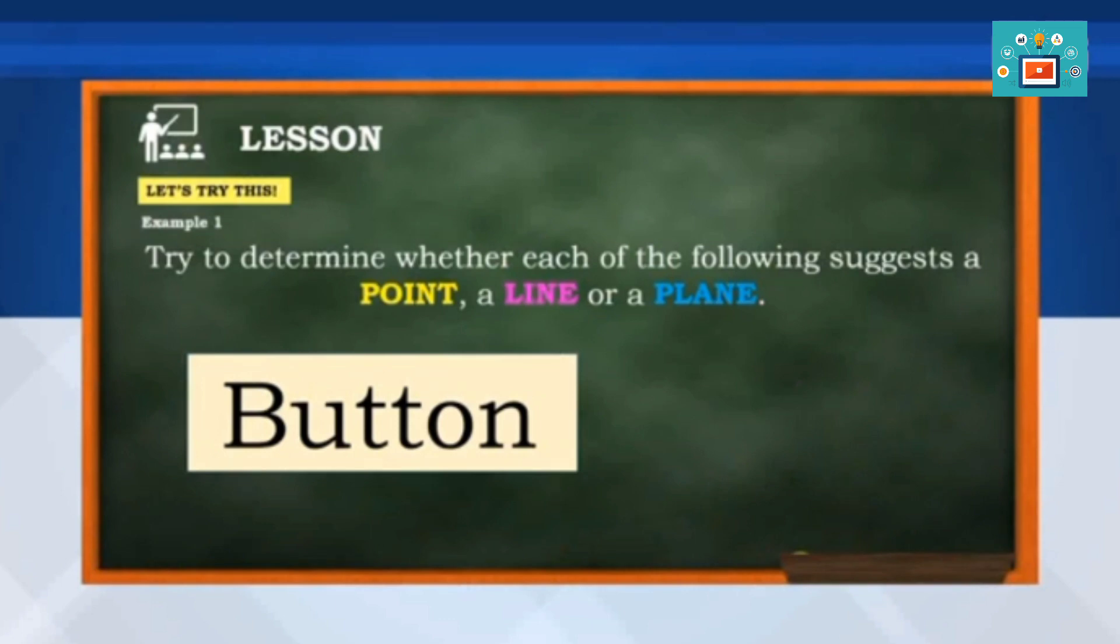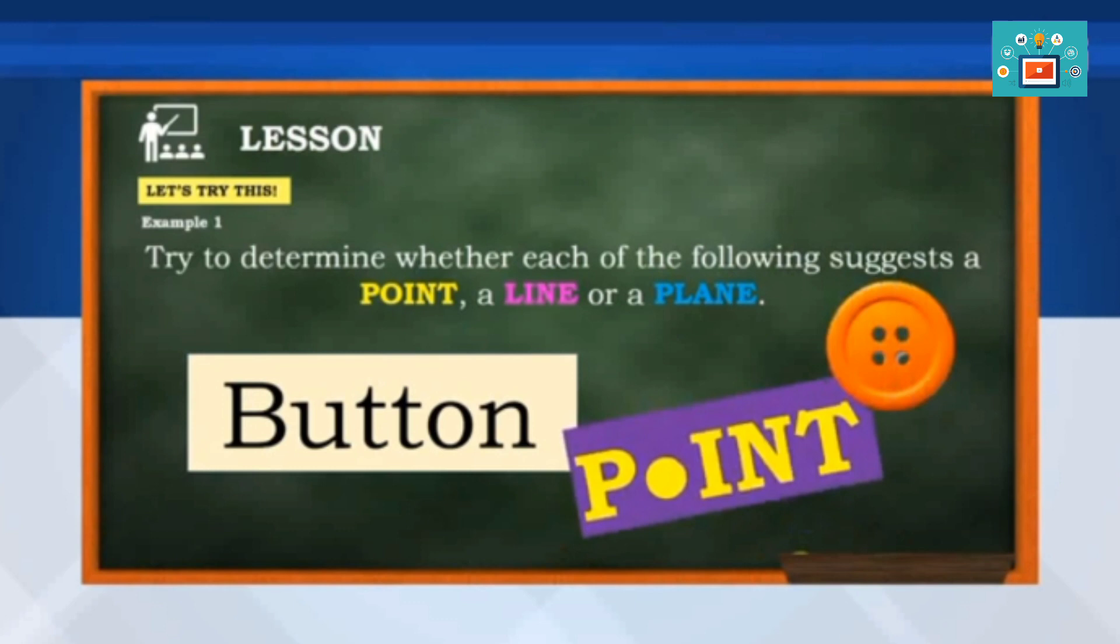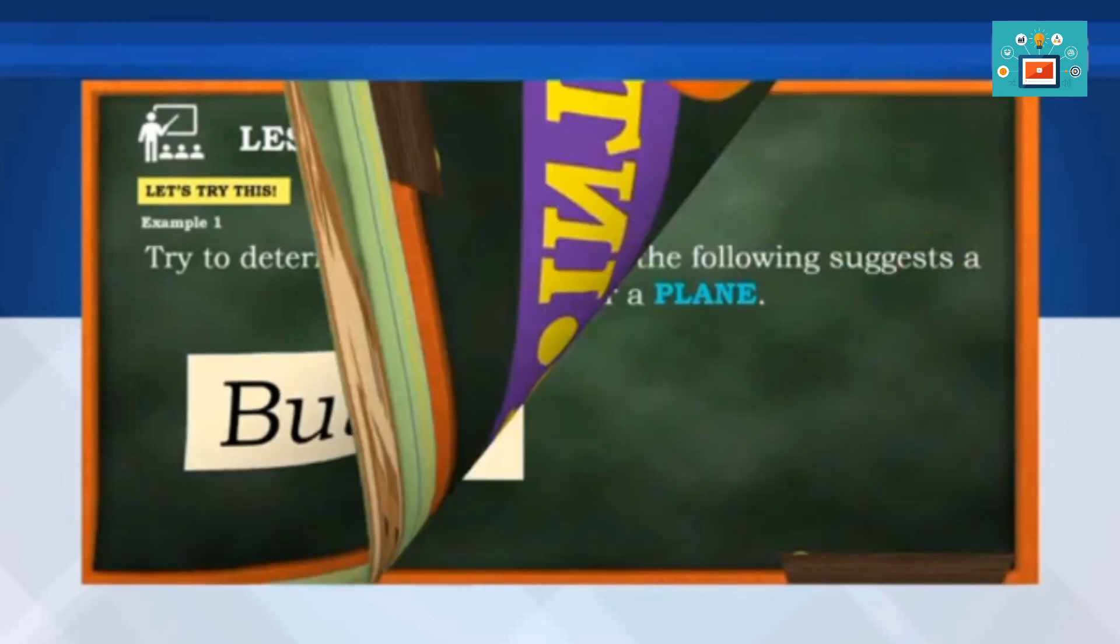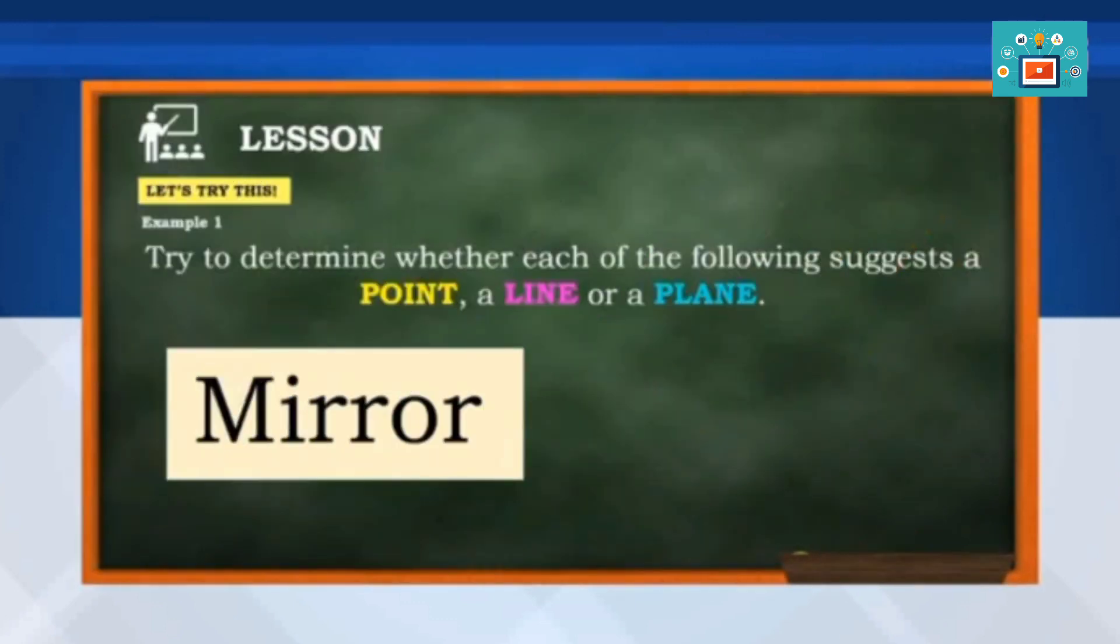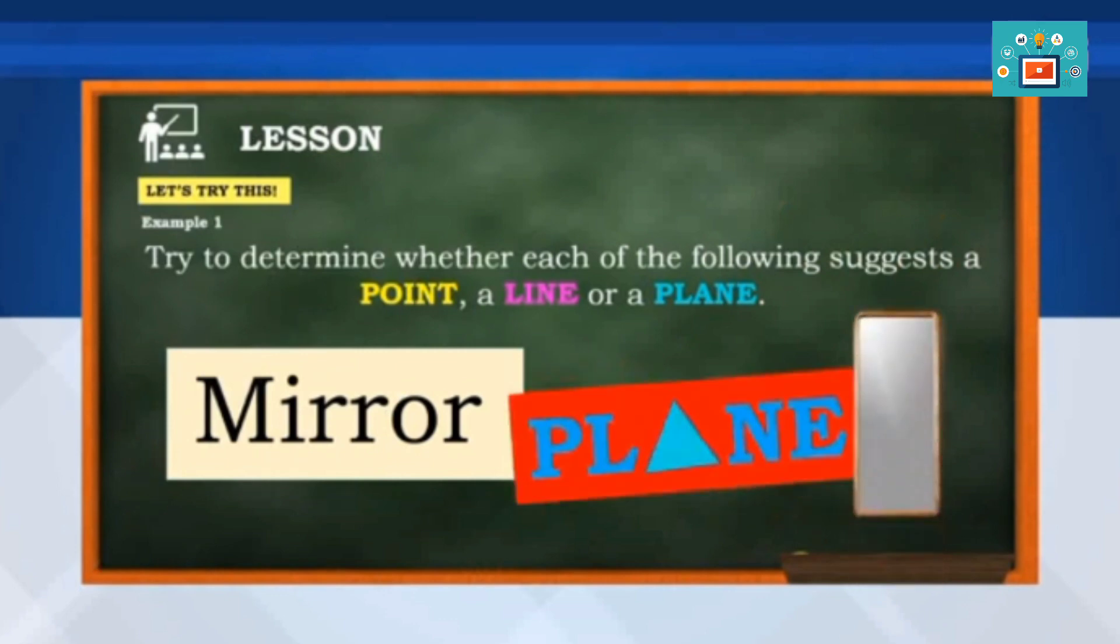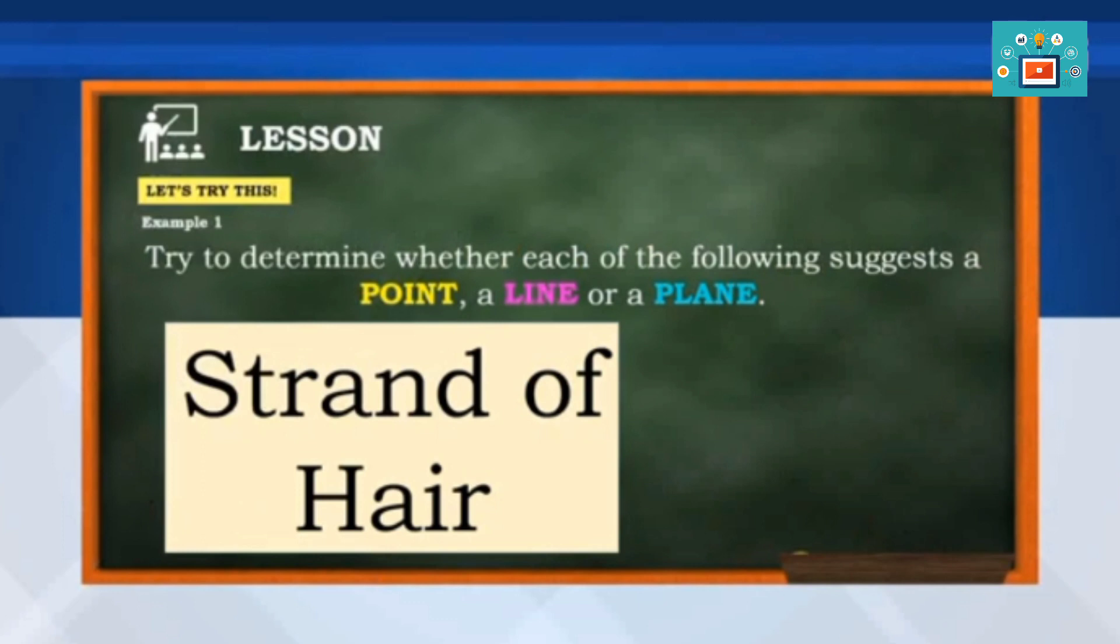Button. It's a point. How about mirror? A plane. Strand of air. It's a line.